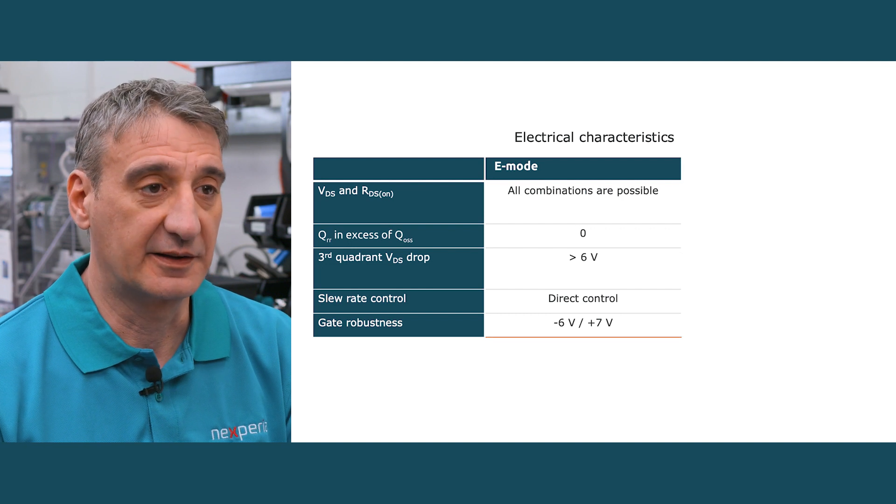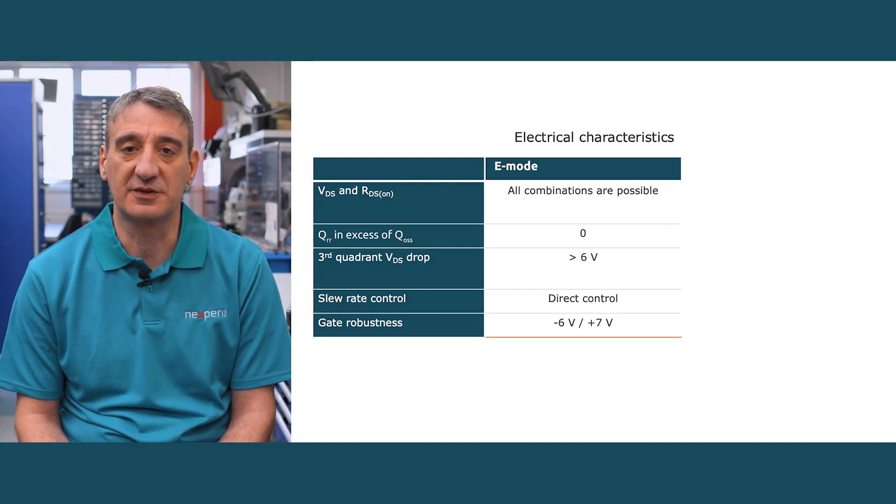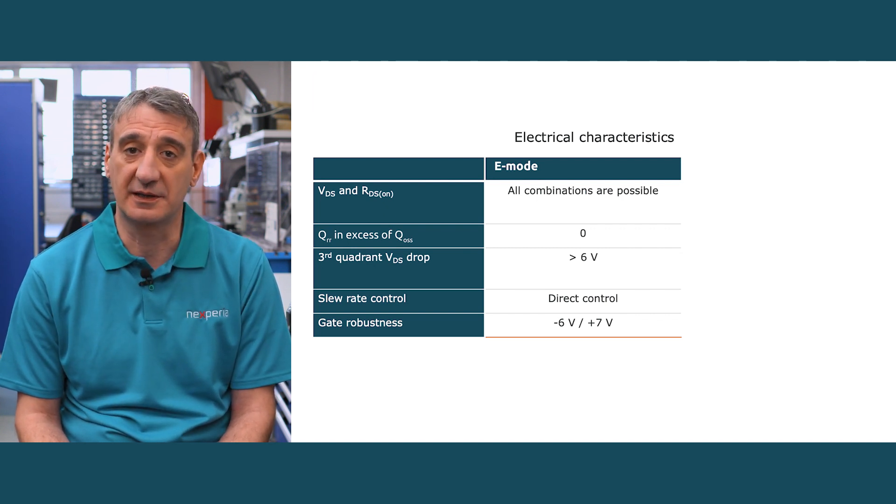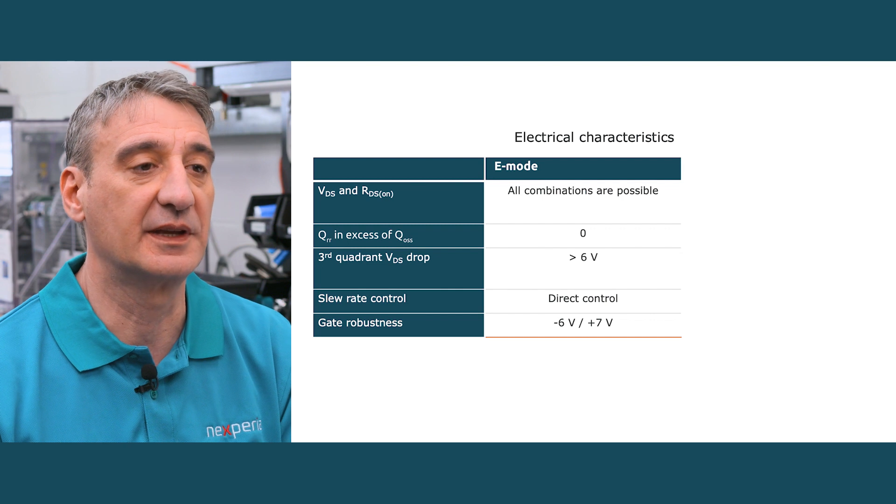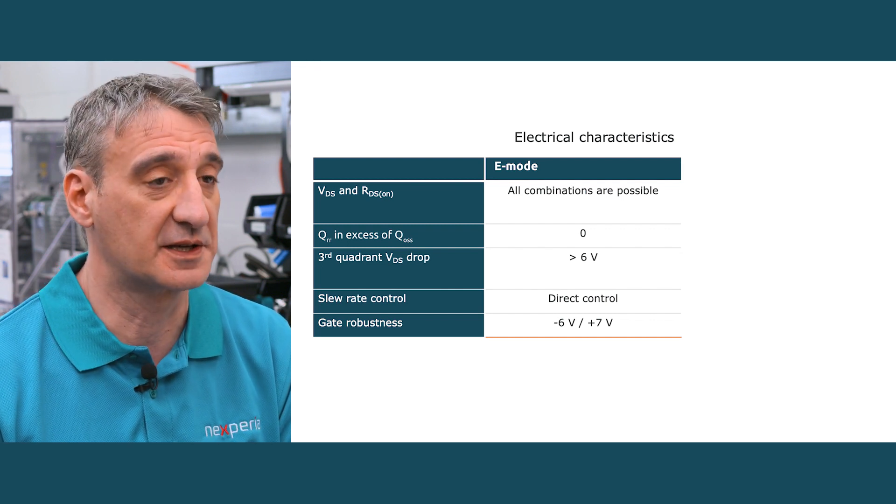Looking at the electrical characteristic differences, for E-mode, all the VDS and RDS-on combinations are possible. The QRR value is at zero, the third quadrant VDS drop is higher than 6 volts, and the slew rate control is direct.